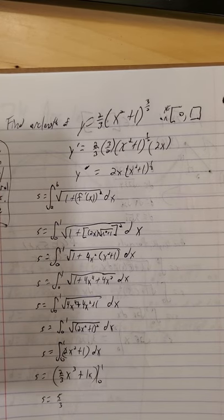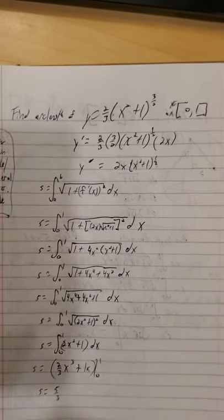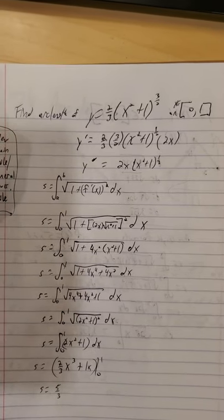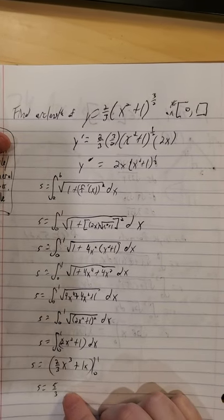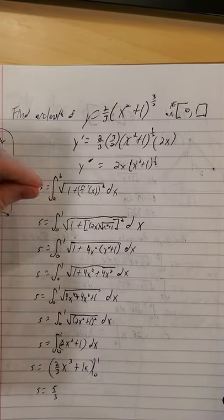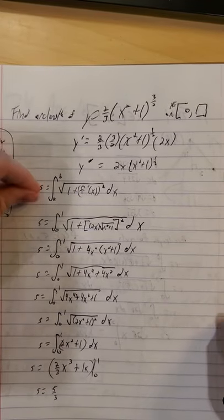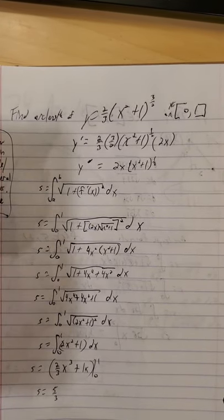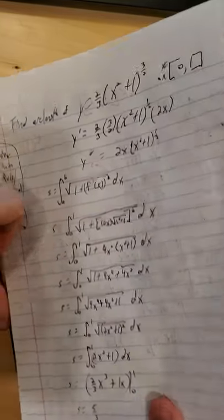So our units on that are just whatever the original unit. Since we're talking a length, length would be in inches or feet or yards or meters, whatever the original measurement was, as opposed to the volume where we had cubic units or area where we have square units.